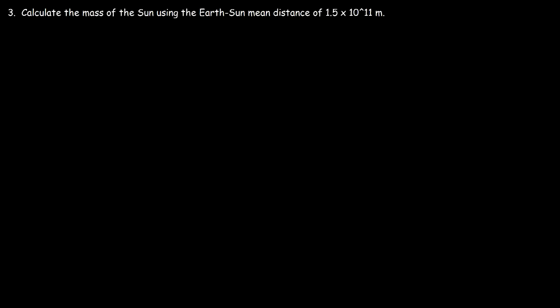Problem three: calculate the mass of the Sun using the Earth-Sun mean distance of 1.5×10¹¹ m. Earlier in the video we derived the equation G·M_sun·T² = 4π²R³. We can now use this directly.